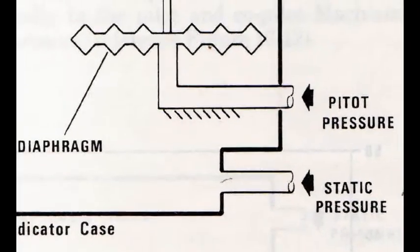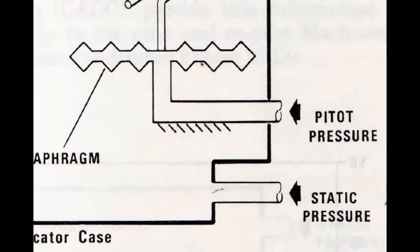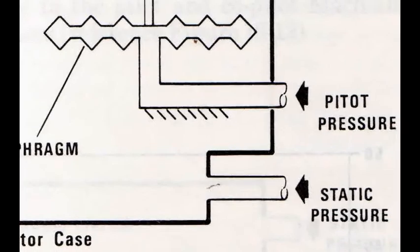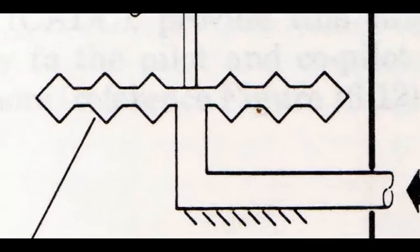Pitot pressure, or forced air, is on the inside of the diaphragm, and static pressure is on the outside of the diaphragm. The diaphragm will show the difference between the two pressures. It's essentially a mechanical calculator.